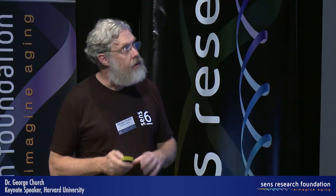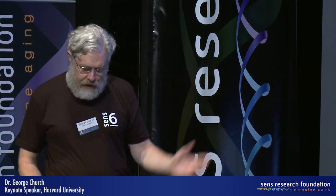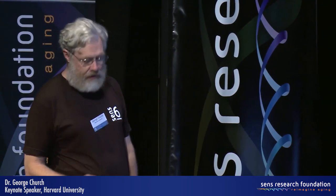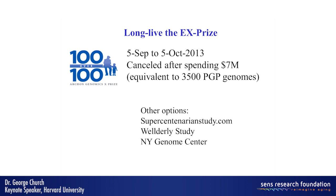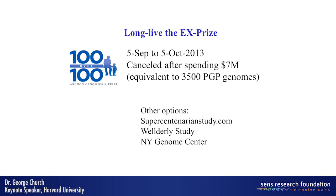There was an XPRIZE that was supposedly going to deliver 100 centenarian genomes at the end of this month. They spent $7 million promoting it and didn't do anything — they canceled it recently. With $7 million, we could have sequenced 3,500 genomes, including those 100 centenarian genomes. That's a pity. But there are other studies, and we will have more centenarian genomes soon.